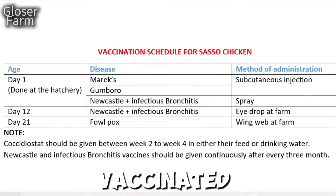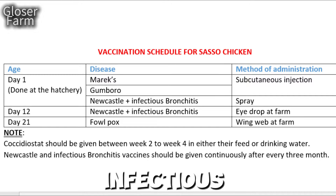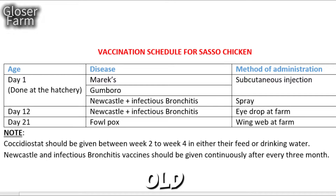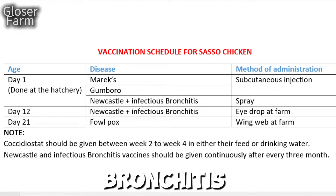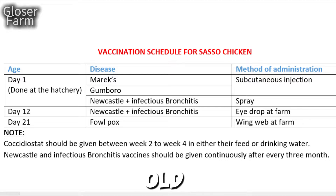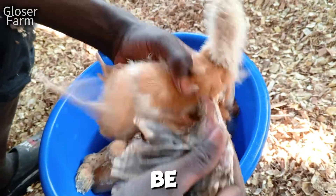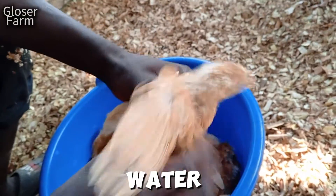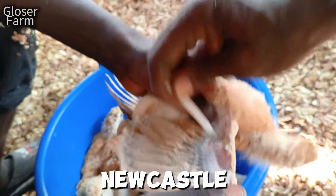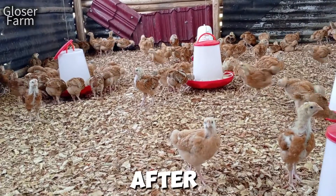Here is the vaccination schedule for Sasso chicken. Immediately after hatching, chicks are vaccinated against Marek's disease, Gumboro, Newcastle disease, and infectious bronchitis at the hatchery when they are one day old. On day 12, they are again vaccinated against Newcastle and infectious bronchitis. When they are 21 days old, they are vaccinated against fowlpox disease. Note that coccidiostat should be given to chickens between two to four weeks in either their feed or drinking water, and Newcastle and infectious bronchitis vaccines should be given continuously after every three months.